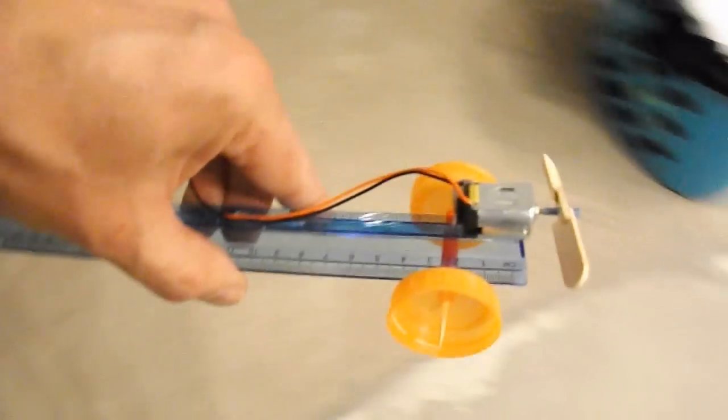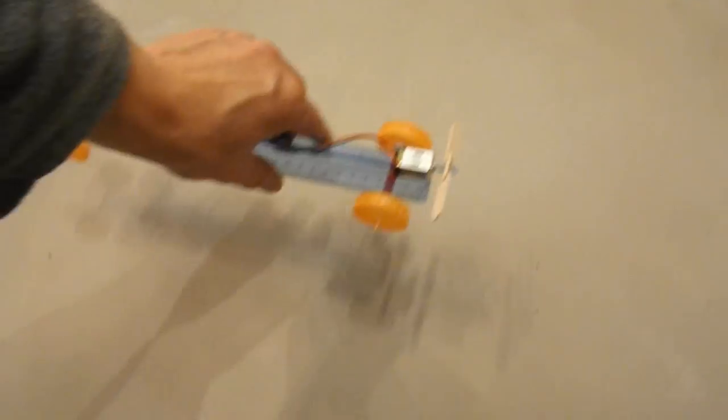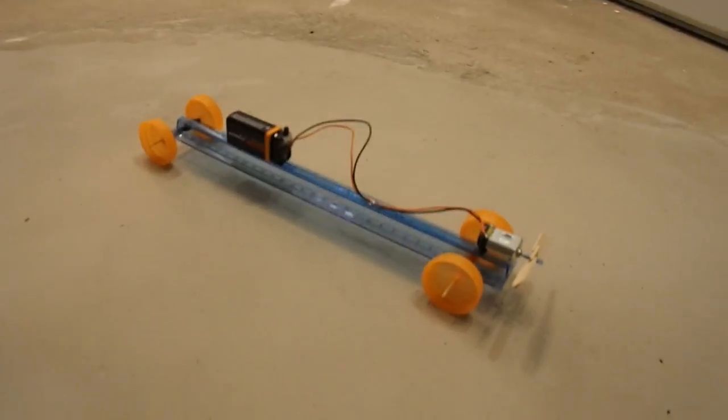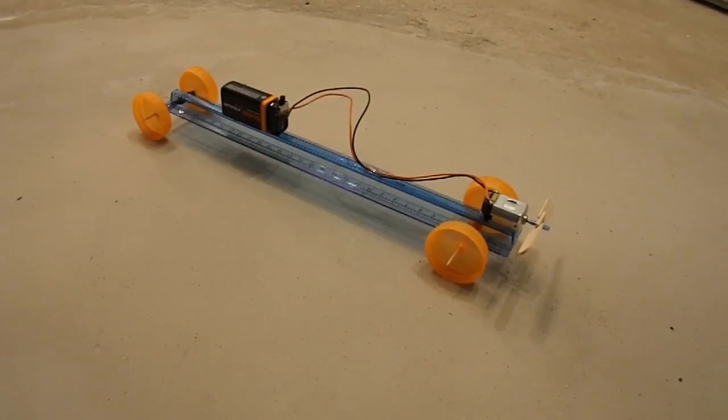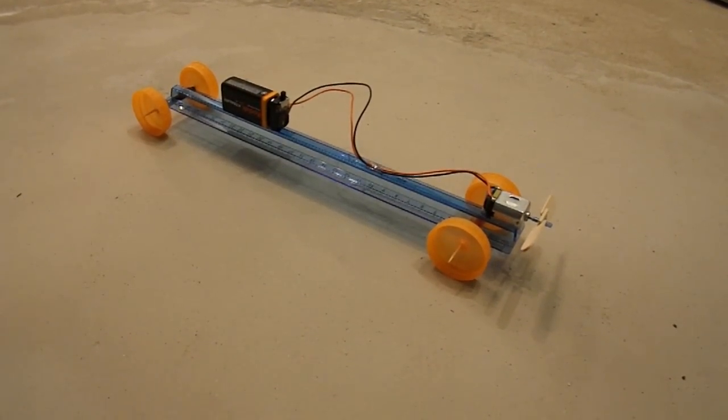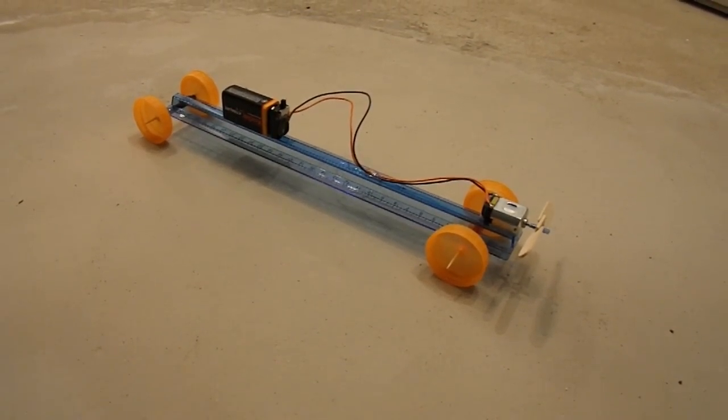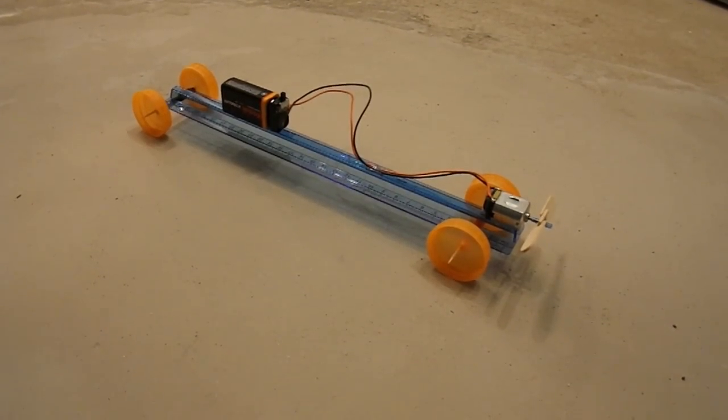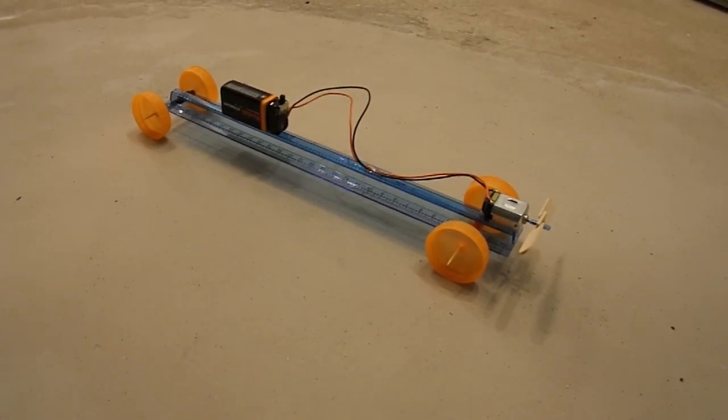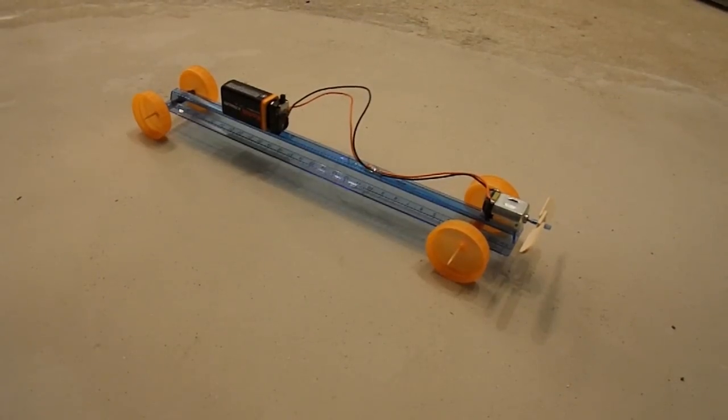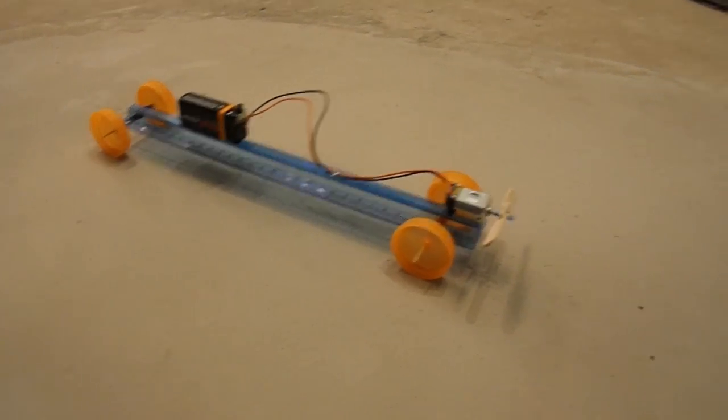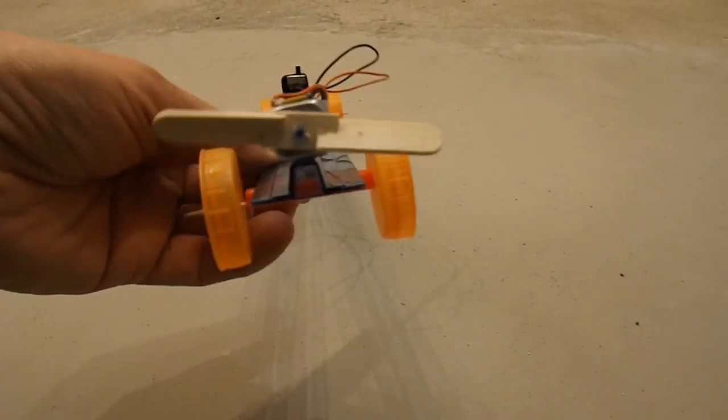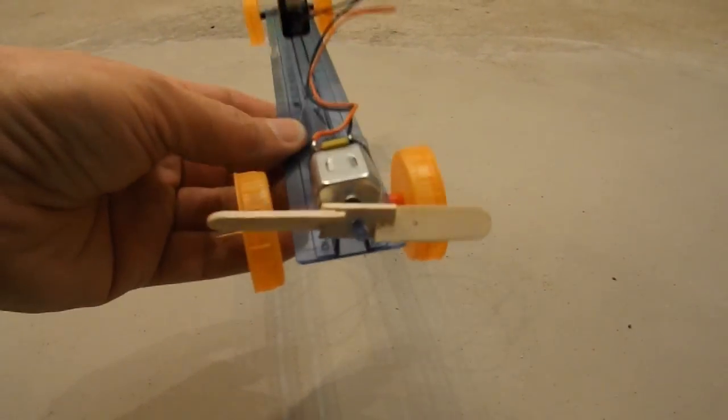So there we go. A fan driven car. Made from a 30cm ruler. Four plastic bottle tops. Two toothpicks. Drinking straws for the axle tubes. Electric motor. And a popsicle stick for the propeller.